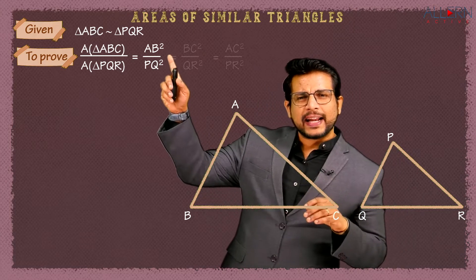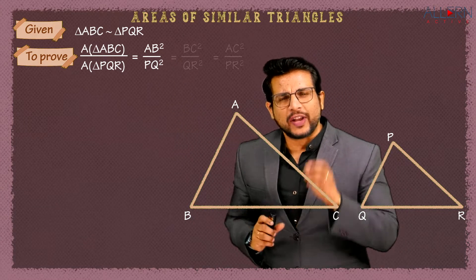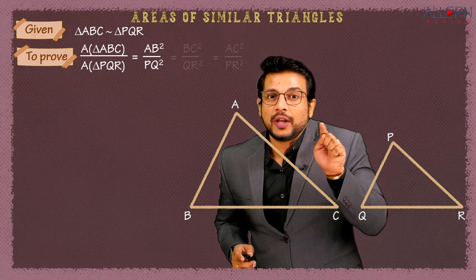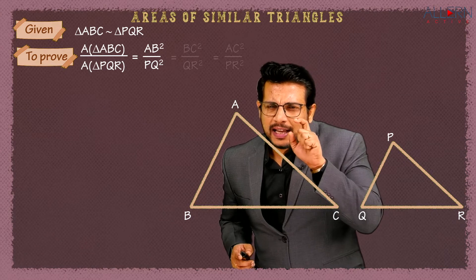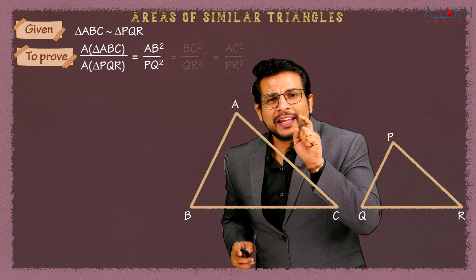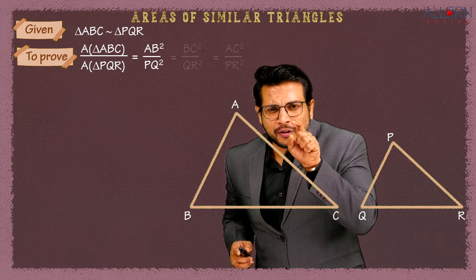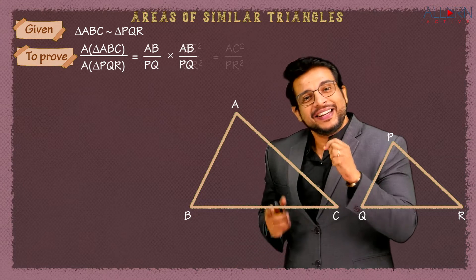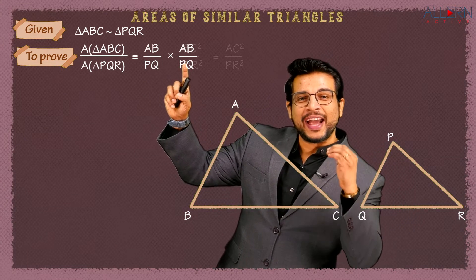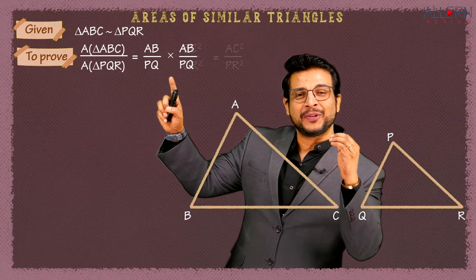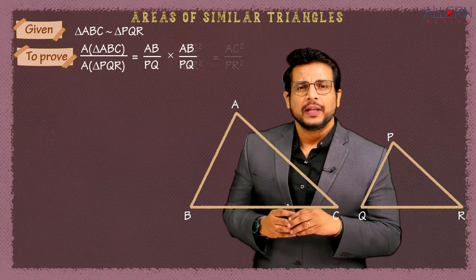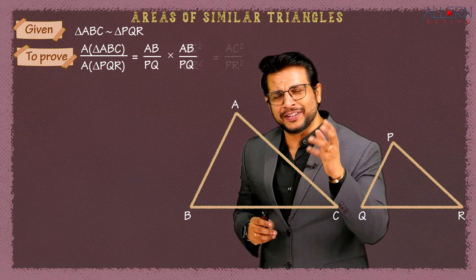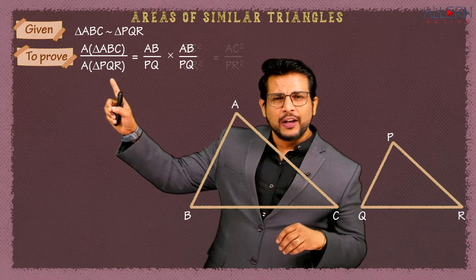Now, AB² upon PQ² means AB×AB upon PQ×PQ. So the same ratio AB²/PQ² can be written as a product of two ratios: (AB/PQ) × (AB/PQ). That's the same because AB×AB is AB² and PQ×PQ is PQ². This is what we are supposed to prove — as a product of two ratios.